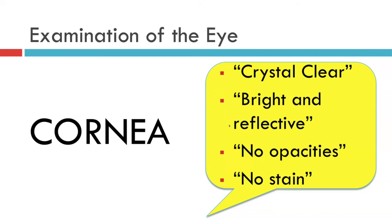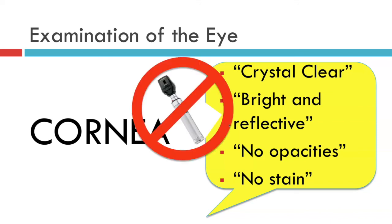That's the end of the examination of the cornea. Note that we have not needed to perform fundoscopy to examine this structure either. That leaves us free to move swiftly on to the next structure of the eye, which is the anterior chamber — and that's the subject of the next video.